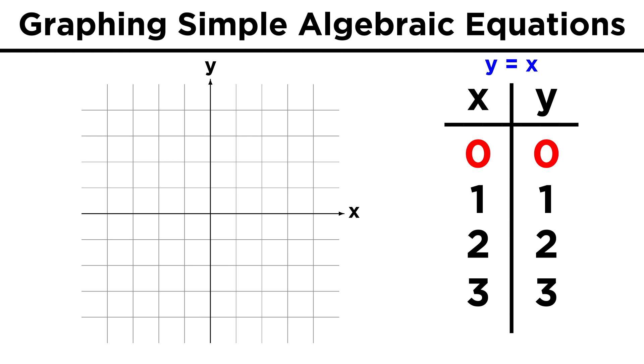If x equals zero and y equals zero, that would be this point here, where the axes cross. This is called the origin. So let's put a dot there.